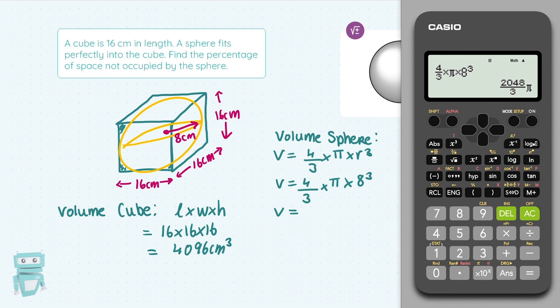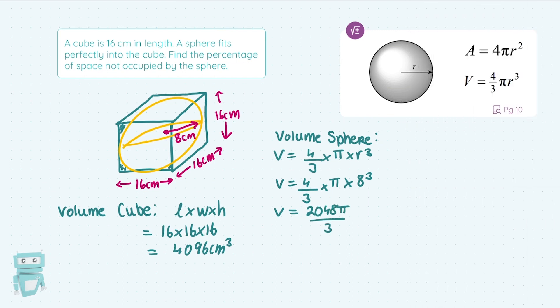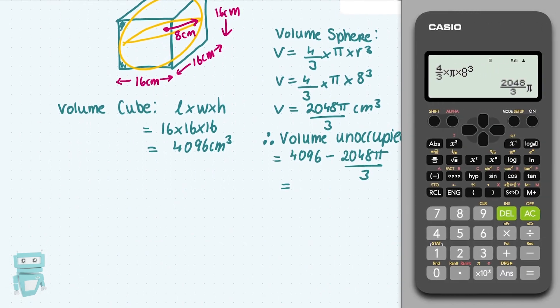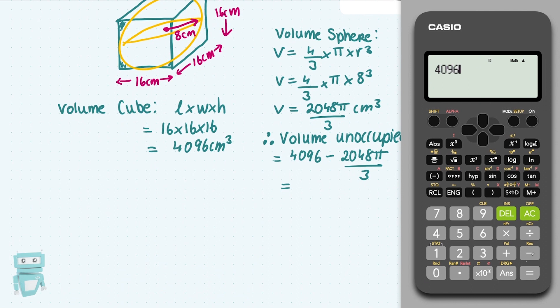Because it's just simply going to be a matter of one number subtracting from another. And that means the volume unoccupied is one minus the other. All we've got to do is 4096 minus, and use the answer button. So the last number we had in our calculator. And we've got 1951, say to two decimal places, .34.